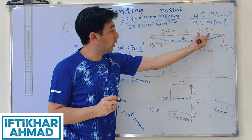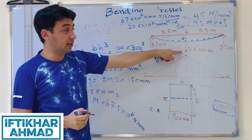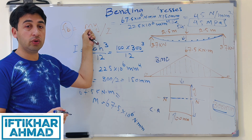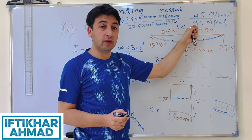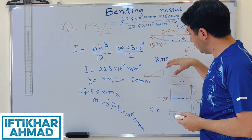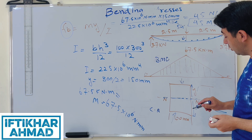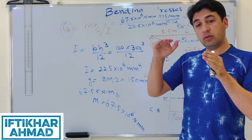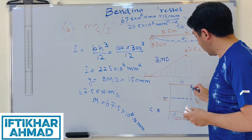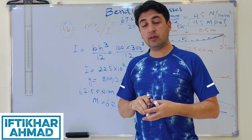To summarize: for a beam of 5 m length with a 54 kN force applied, the maximum bending moment is 67.5 kN·m. Using fb = MY / I with the given rectangular cross-section, the bending stress is 45 MPa both in tension and in compression, because the cross-section is symmetrical. In the next video we will solve a problem with a non-symmetrical cross-section, finding separate tensile and compressive bending stresses.